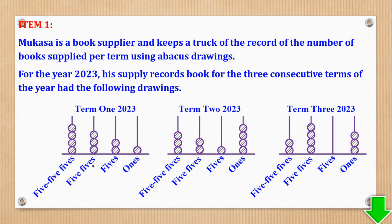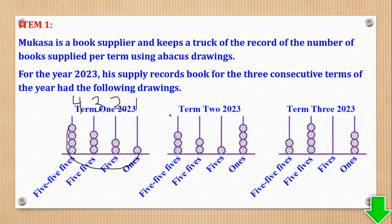Reading off the abacus, you count the number of beads on each column. For term 1, counting the beads gives 4, 3, 2, 1 in base 5. For term 2, reading the beads gives 3, 2, 1, 4 in base 5. For term 3, reading the beads gives 2, 4, 0, 3 in base 5.